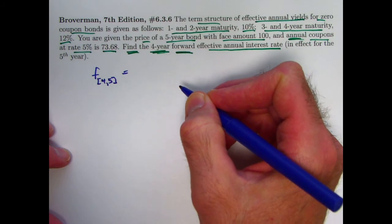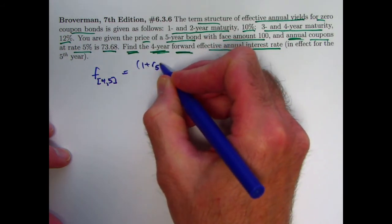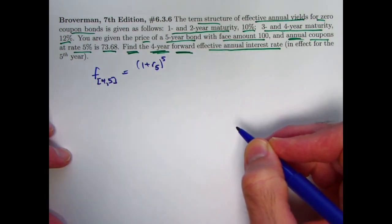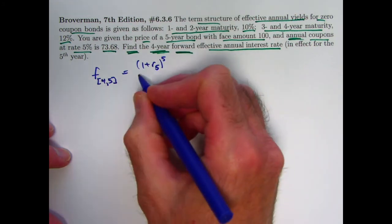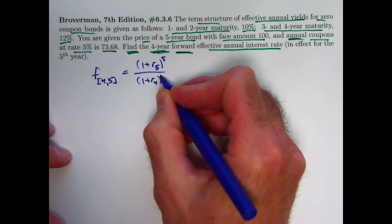The formula that we derived in the last video is this will equal 1 plus R5 to the fifth, where R5 would be the spot rate for a zero-coupon bond with five-year maturity, divided by 1 plus R4 to the fourth power.